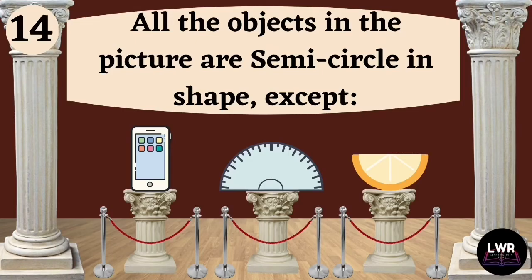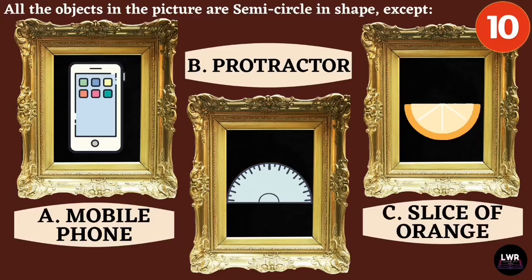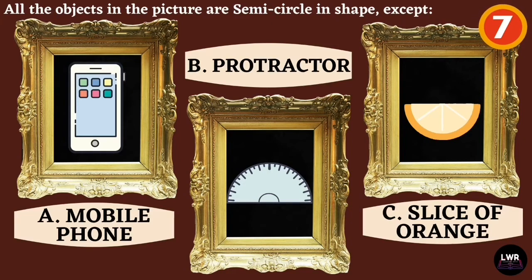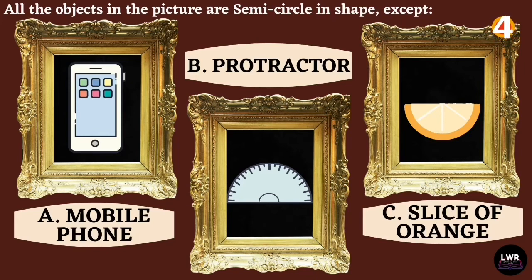Question number fourteen. All the objects in the picture are semicircle in shape, except: letter A, mobile phone; letter B, protractor; or letter C, slice of orange.